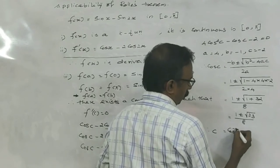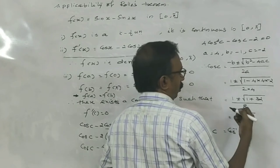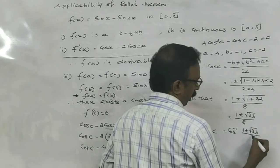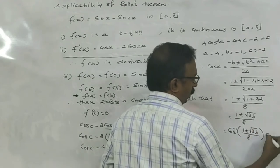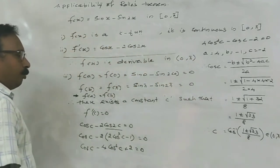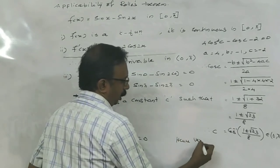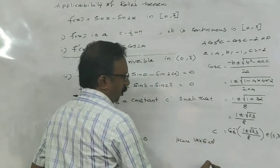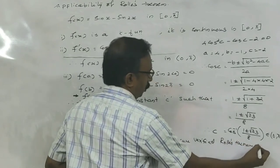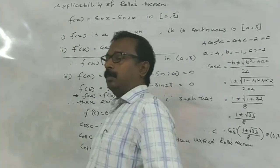Here we get two values: C equals cosine inverse of (1 plus or minus root of 33 divided by 8). These values lie between 0 and pi. Hence Rolle's theorem is verified.